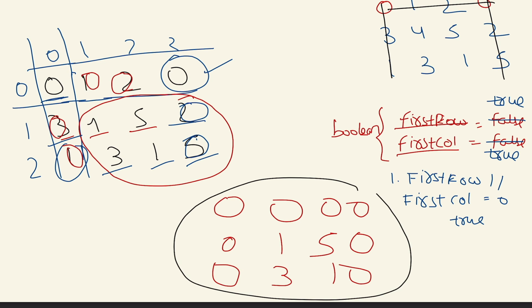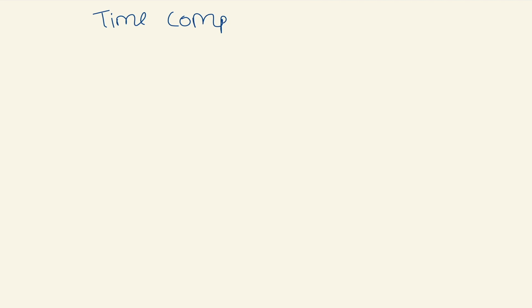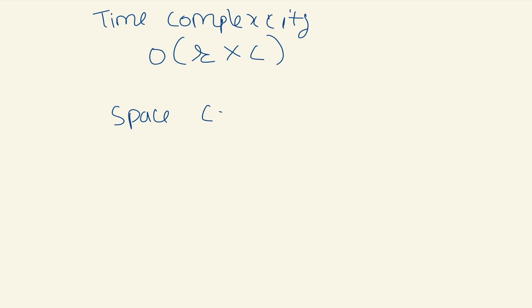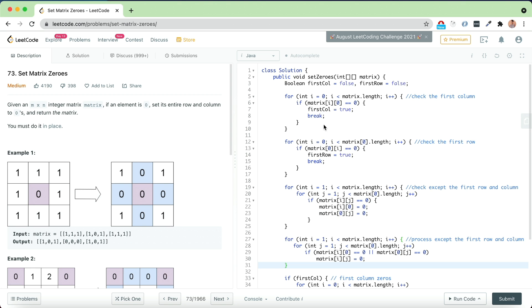Let's see the time and space complexity for this solution. Time complexity is O(row × column) because we iterate through the matrix. Space complexity is O(1) because we are not using any extra memory — only a few boolean variables.